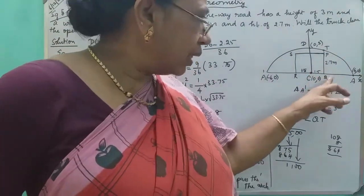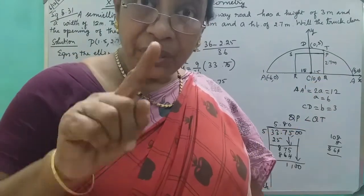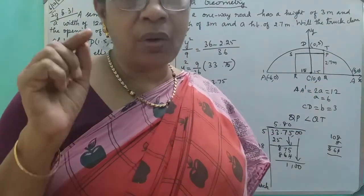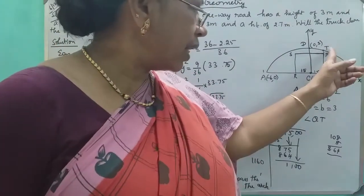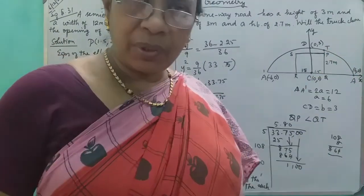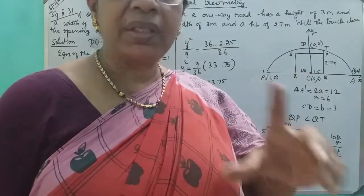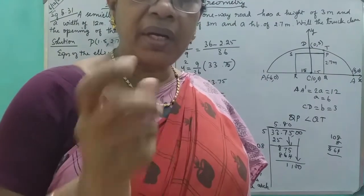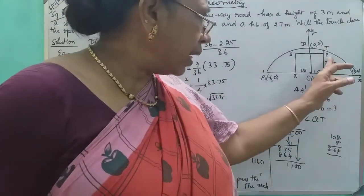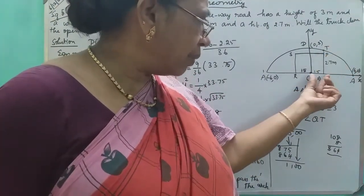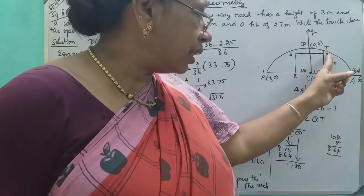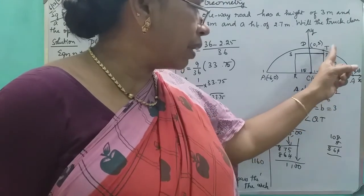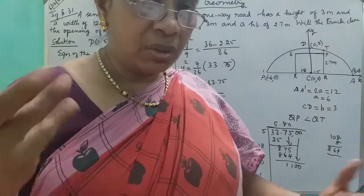The truck is at points QP and QT. At the base Q, the x coordinate is 0. Point P is at (1.5, 2.7) and T is at (1.5, y). That's what we need to find.